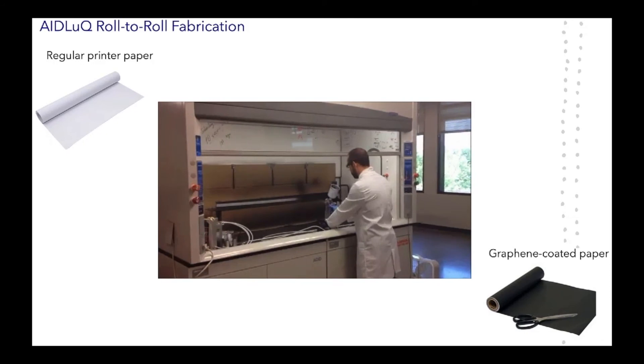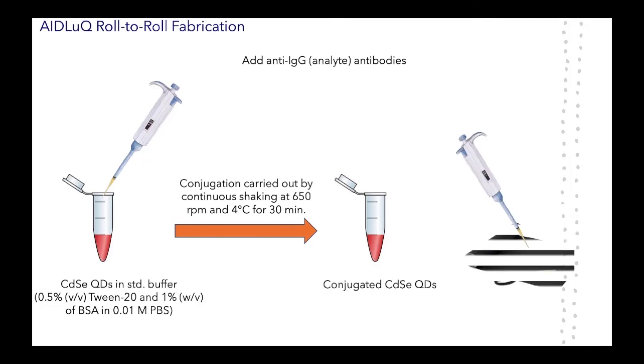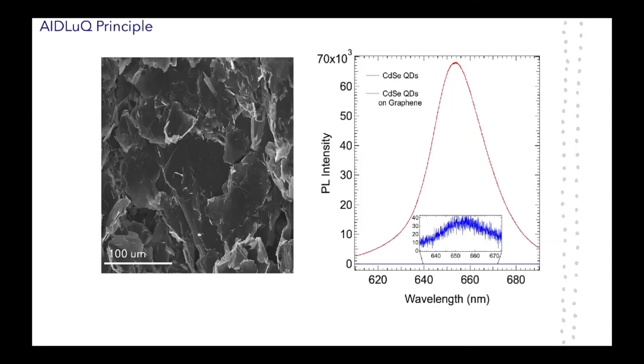On this graphene coated paper, we deposit cadmium selenide quantum dots which fluoresce in red color when excited with a green laser. We conjugate these cadmium selenide quantum dots with anti-IgG human antibodies. And after the conjugation process, these cadmium selenide quantum dots are drop-casted on the graphene coated paper. So, from this anti-IgG antibody coated paper, we cut out one square centimeter coupons. And these coupons look this way in electron microscope.